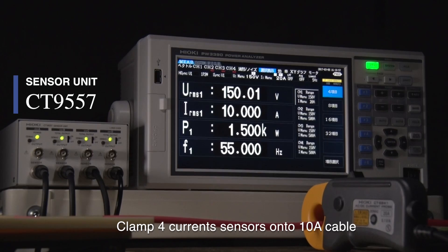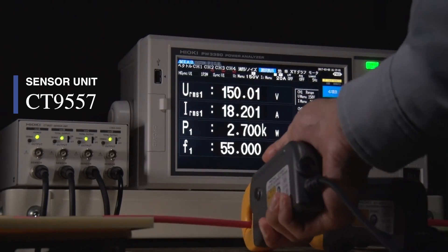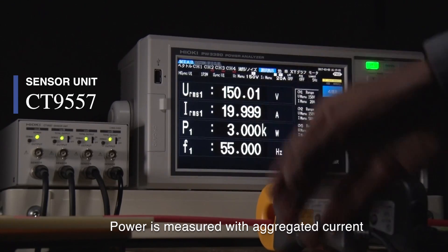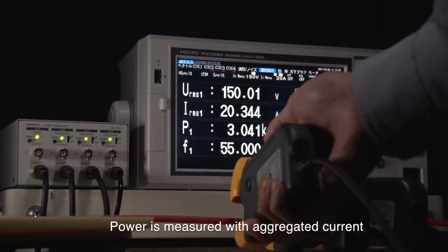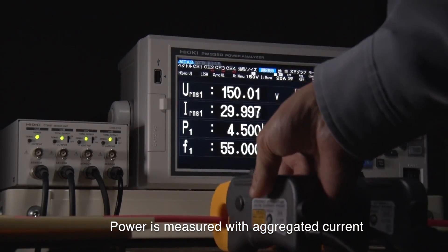To demonstrate, clamp four current sensors onto this 10-amp cable. As shown, power is measured with the current aggregated by the CT9557.